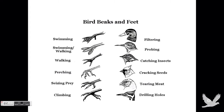Birds are also defined by their beaks and feet, and they have different beaks and feet depending on the type of bird they are. Some, which are hunting birds, have beaks that are sharper for tearing into meat, while birds that eat seeds tend to have shorter beaks for picking up seeds and insects.